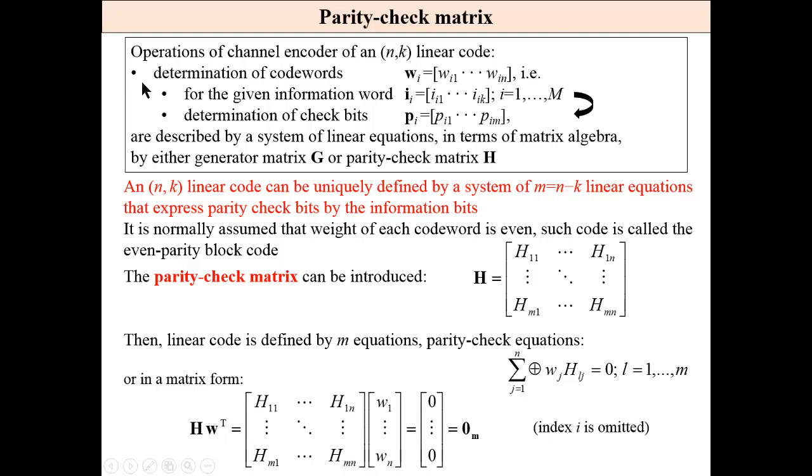Parity check matrix. Operations of the channel encoder is determination of codewords for the given information word, determination of check bits. And this can be done by means of parity check matrix.